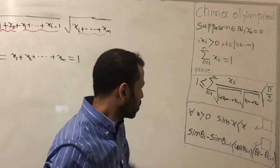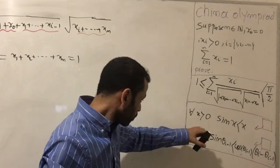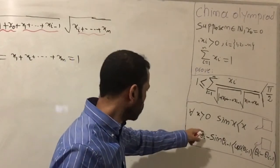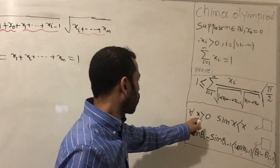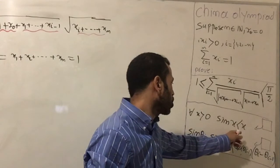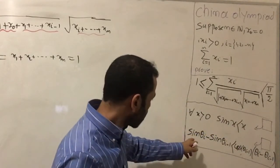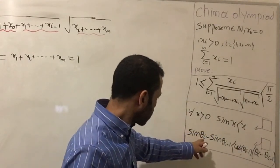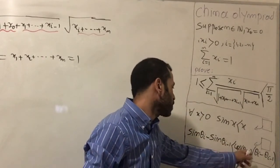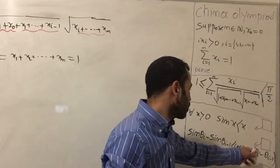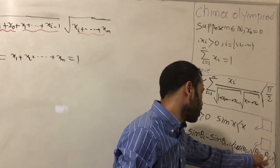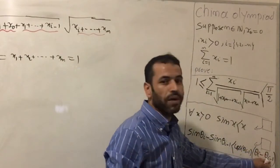Before we start proving this question, I'm going to prove these two identities and use them as tools. The first one: for all x strictly greater than 0, we have sin(x) strictly less than x. The second one: we have sin(θᵢ) minus sin(θᵢ₋₁) strictly less than (θᵢ minus θᵢ₋₁) multiplied by cos(θᵢ₋₁).